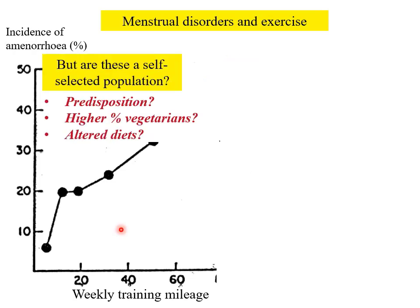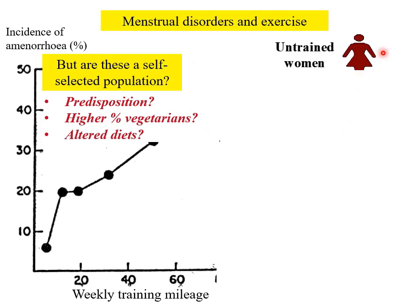It would be easy to argue that this response of increasing amenorrhea with exercise is not representative of the general population — it may be that these are a self-selected population of athletes. Often there's a change in diets, a higher percentage of vegetarians, altered calorie intake, and stricter diets. Let's test it by taking some untrained women and subjecting them to an exercise regime.